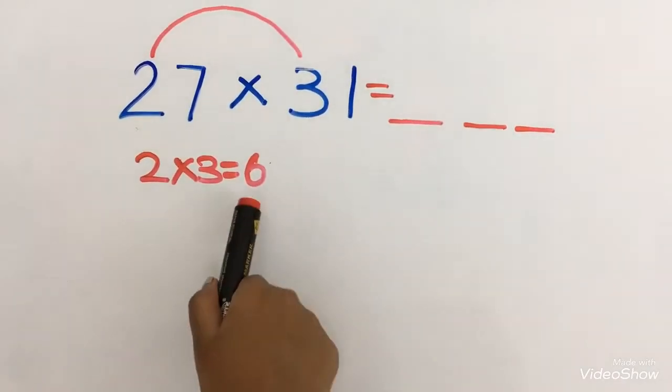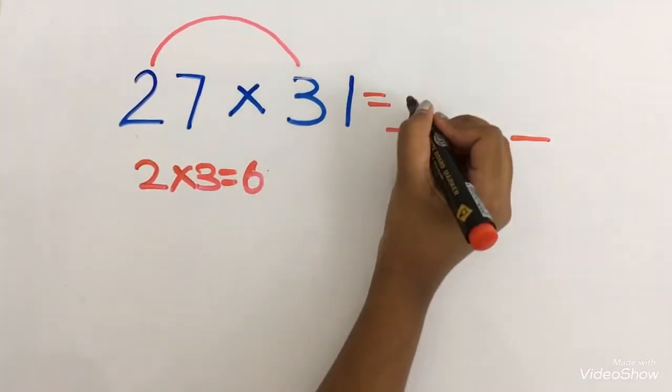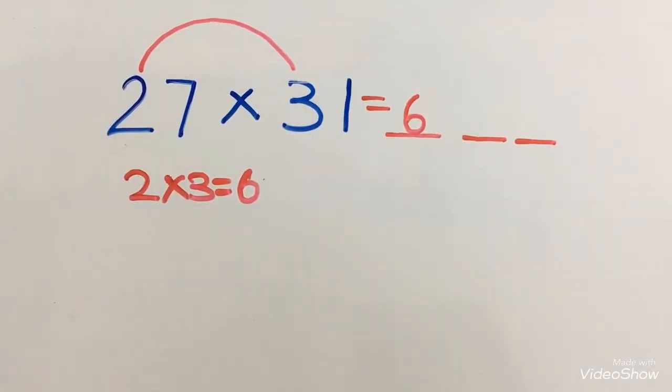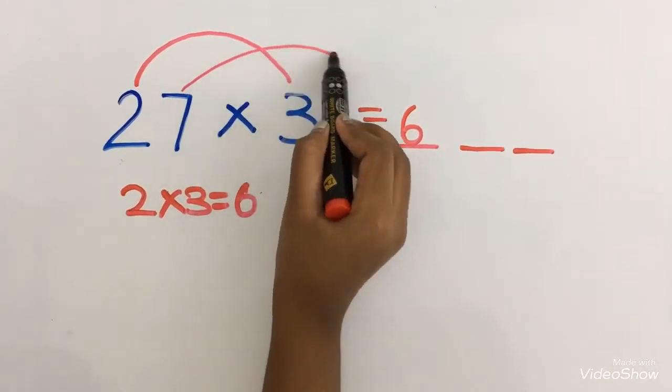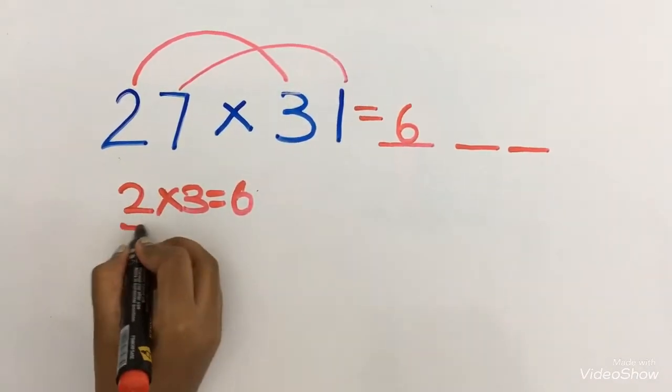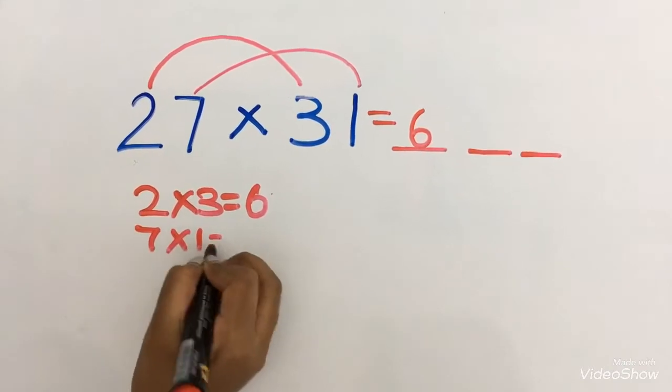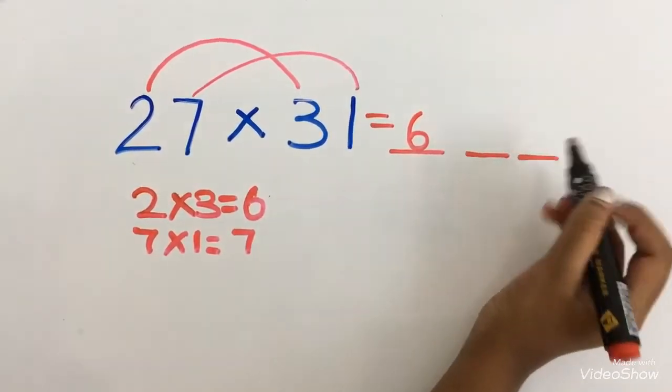Now this answer we should write it here. Now I am going to multiply 7 into 1. 7 into 1 is 7. This answer I am going to write it over here.